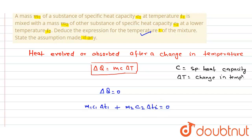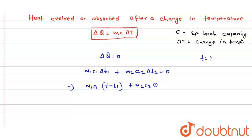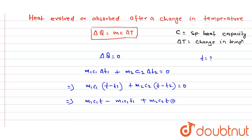The temperature change for the final temperature T can be written as: M1 C1 times (T minus T1) plus M2 C2 times (T minus T2) equals zero. Expanding this gives: M1 C1 T minus M1 C1 T1 plus M2 C2 T minus M2 C2 T2 equals zero.